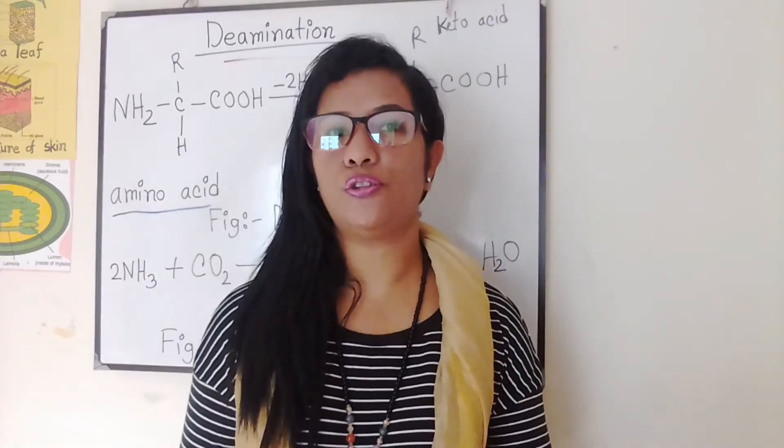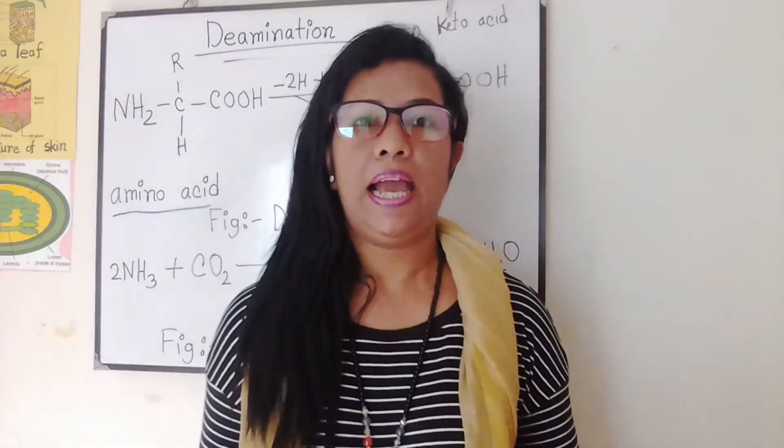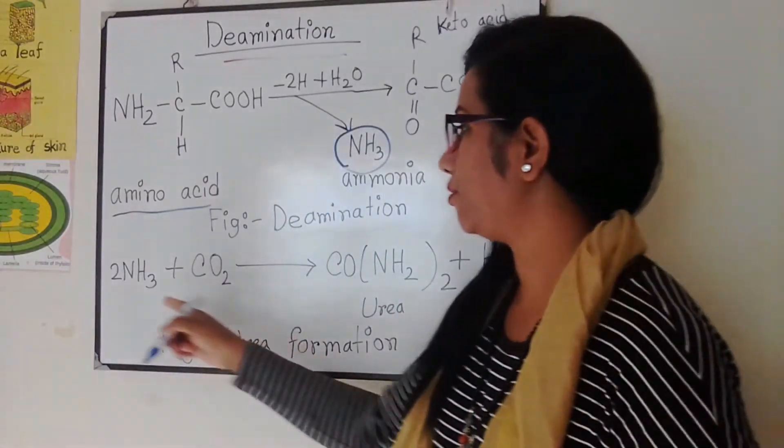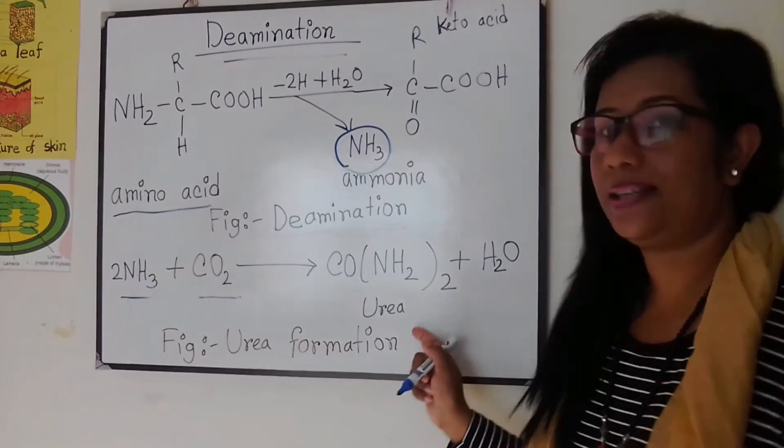Several reactions known as the urea cycle are involved in combining ammonia and carbon dioxide to form urea. You can see this one. Carbon dioxide here and this is urea.